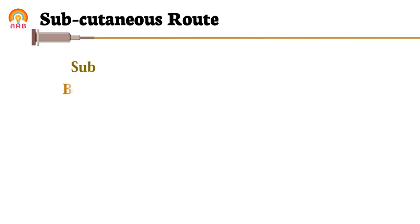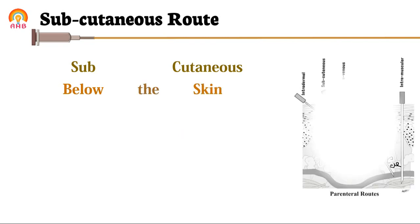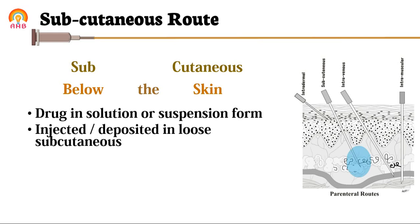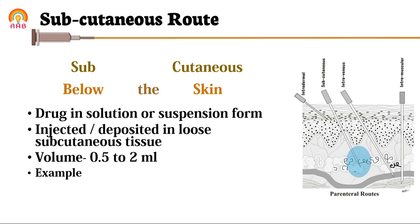Now we will discuss about the subcutaneous route. This word also came from two words: sub meaning below, and cutaneous meaning skin. In this route, drug in the form of solution or suspension is deposited in the loose subcutaneous tissue in a volume of 0.5 to 2 ml. An example of a drug injected by subcutaneous route is insulin injection, and pellets which are introduced as implants.